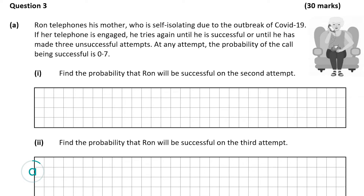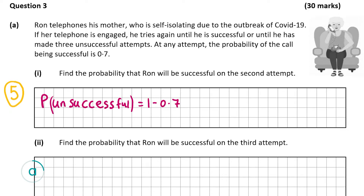Question A part 1, which is worth 5 marks, wants us to find the probability that Ron will be successful on the second attempt. Basically, we're saying he was unsuccessful on the first attempt and then successful on the second. If the probability of him being successful is 0.7, the probability of him being unsuccessful is 1 minus 0.7, which is 0.3.